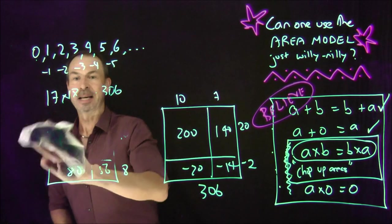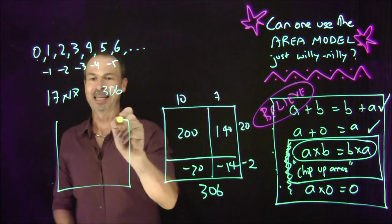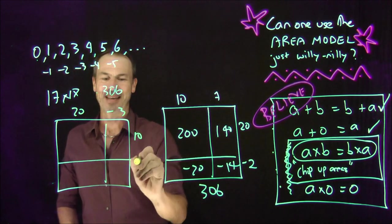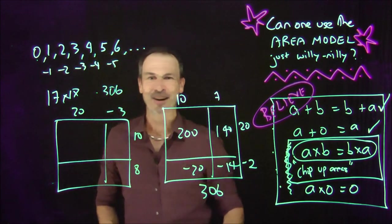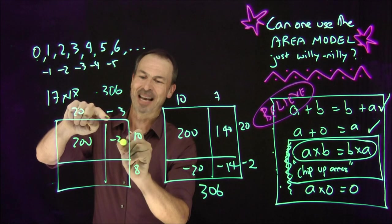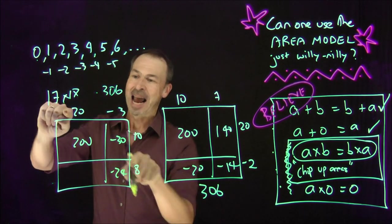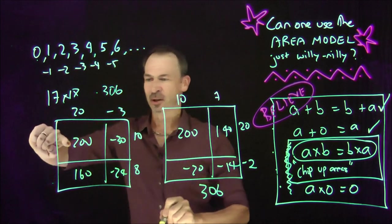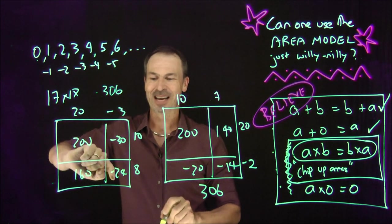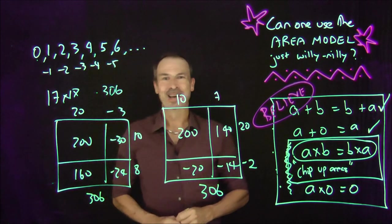Now let me get strange with the 17 instead: 20 and negative 3, keeping the 18 as 10 and 8. 10 times 20 is 200, 10 times negative 3 is negative 30, 8 times negative 3 is negative 24, 8 times 20 is 160. So 200 plus 160 is 360, minus 30 is 330, minus 24 is 306. Even though these pictures don't make sense in geometry, we're choosing to believe they speak arithmetic truth.